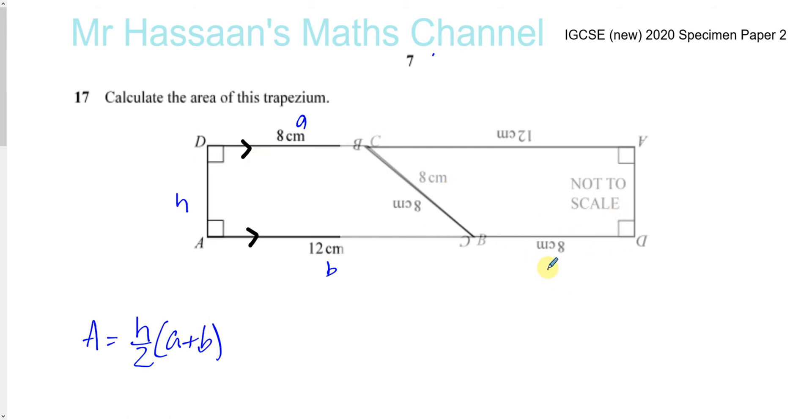So the total length of this rectangle is a + b, and its height is h. If we take the area of the whole rectangle, the area is going to be the width times the length, so it's h times the length, which is a + b.